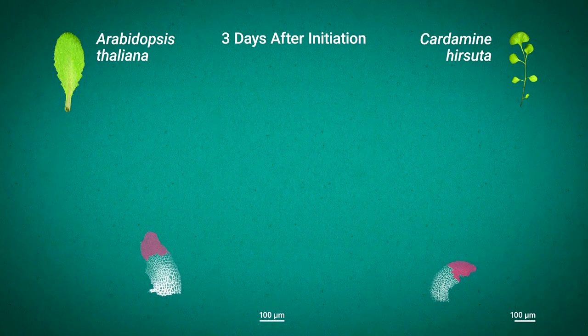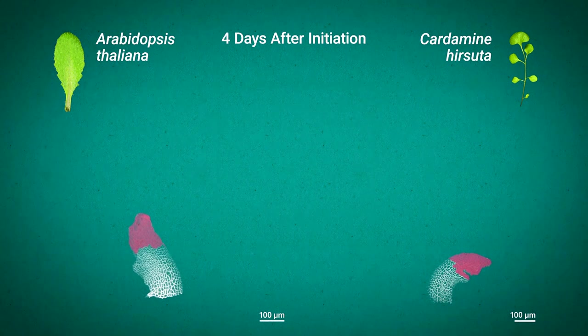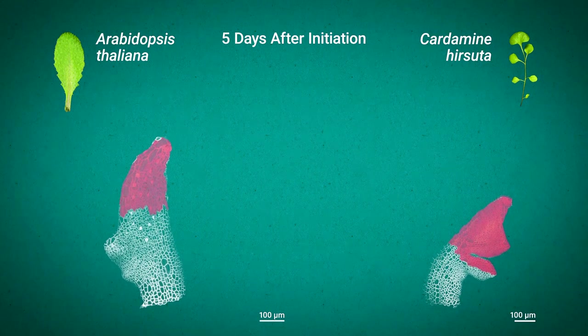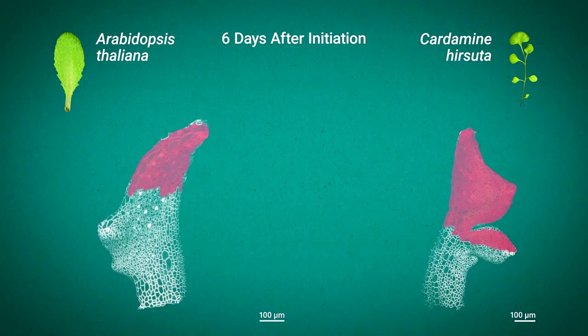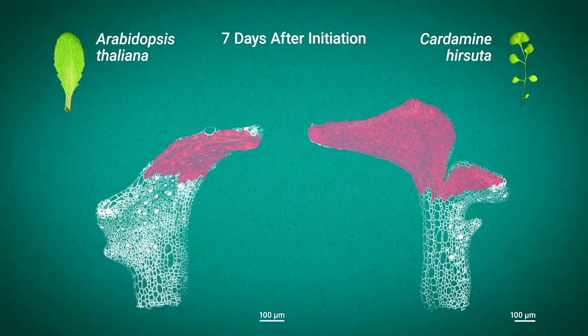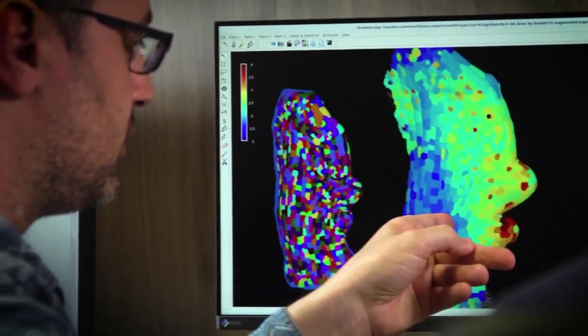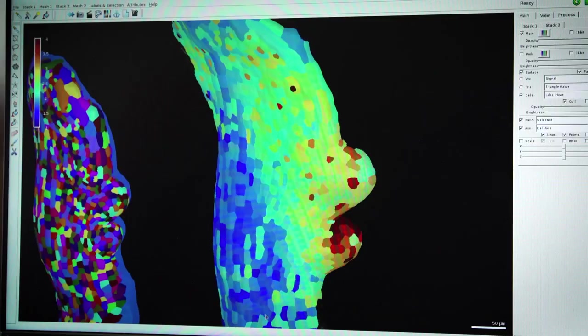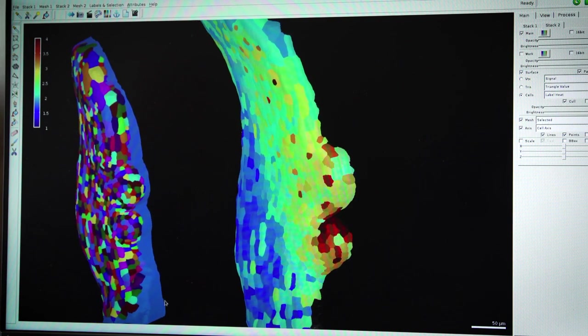Then to compare the growth of these plants we identified equivalent cellular populations in different samples and evaluated how they contribute to growth. Finally to clarify how local genetic control influences shape we employed computational frameworks that connect growth to changes in form.